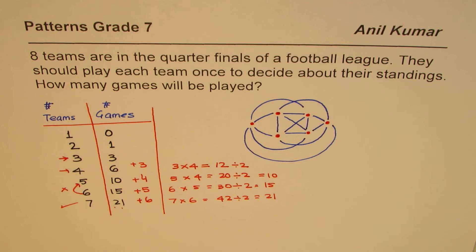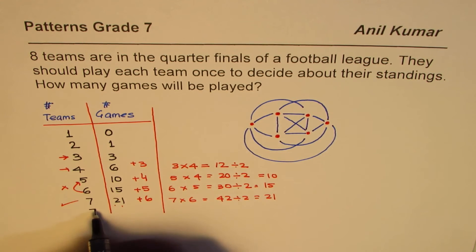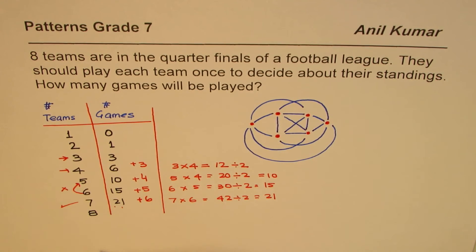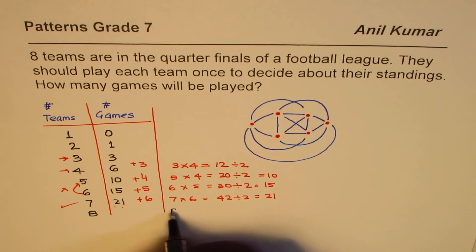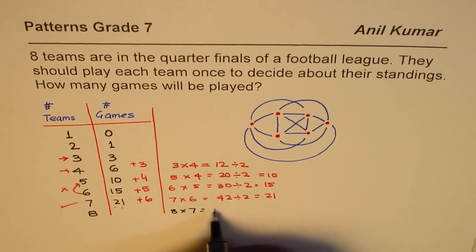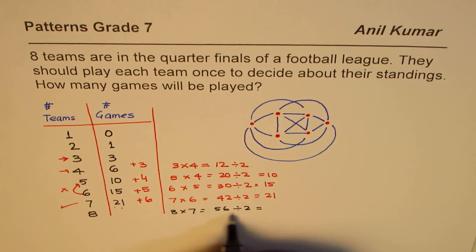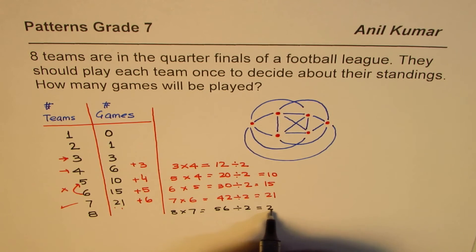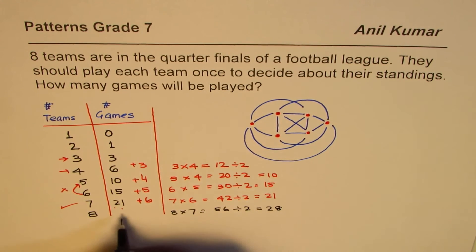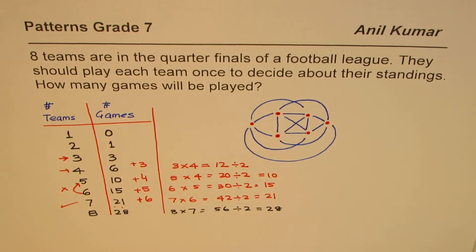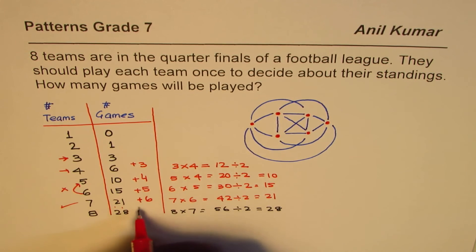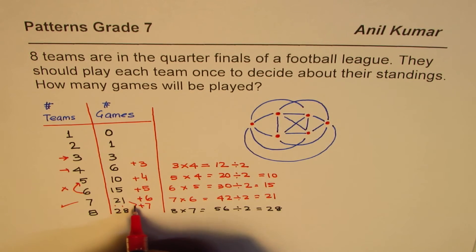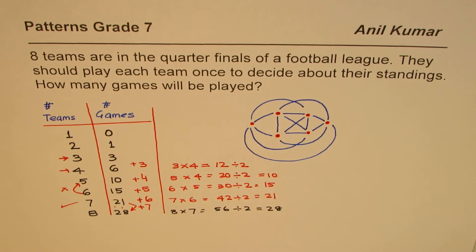Following this pattern, we can get the answer for eight teams also. For eight, it should be eight times seven, which is fifty-six, divided by two, which is twenty-eight. And that should equal twenty-one plus seven — which it does. So the pattern rule works.